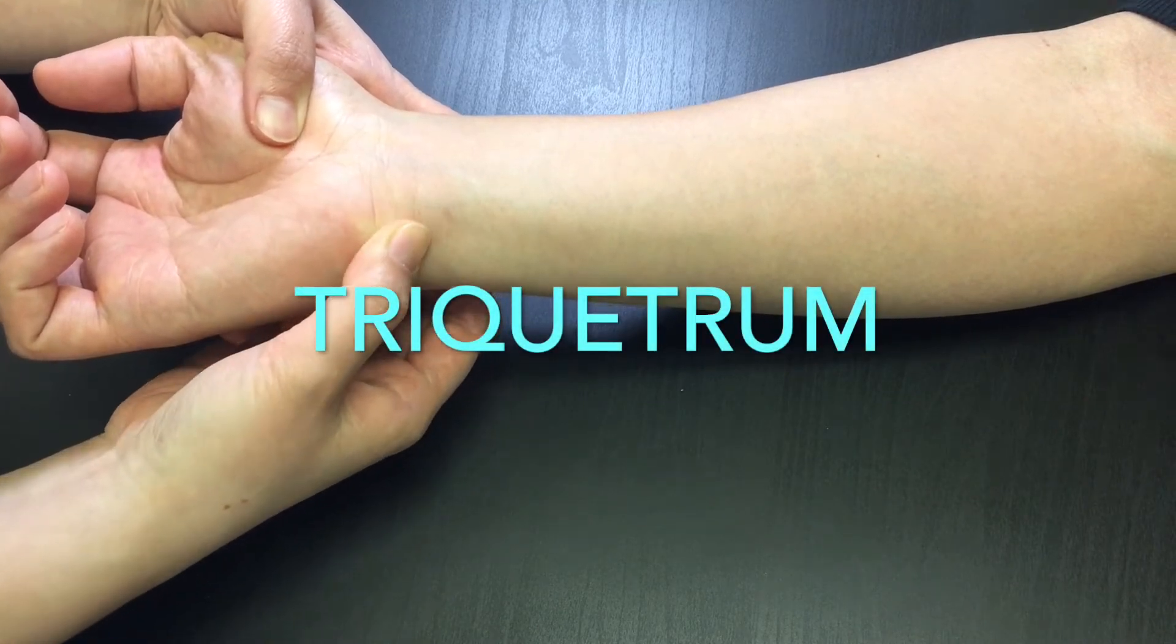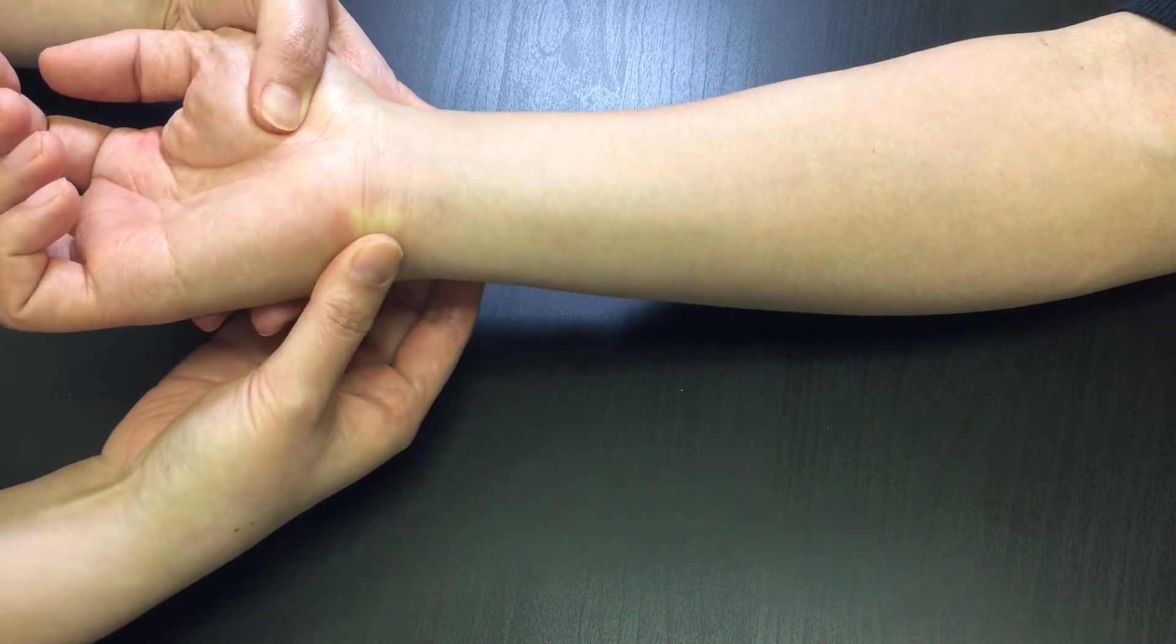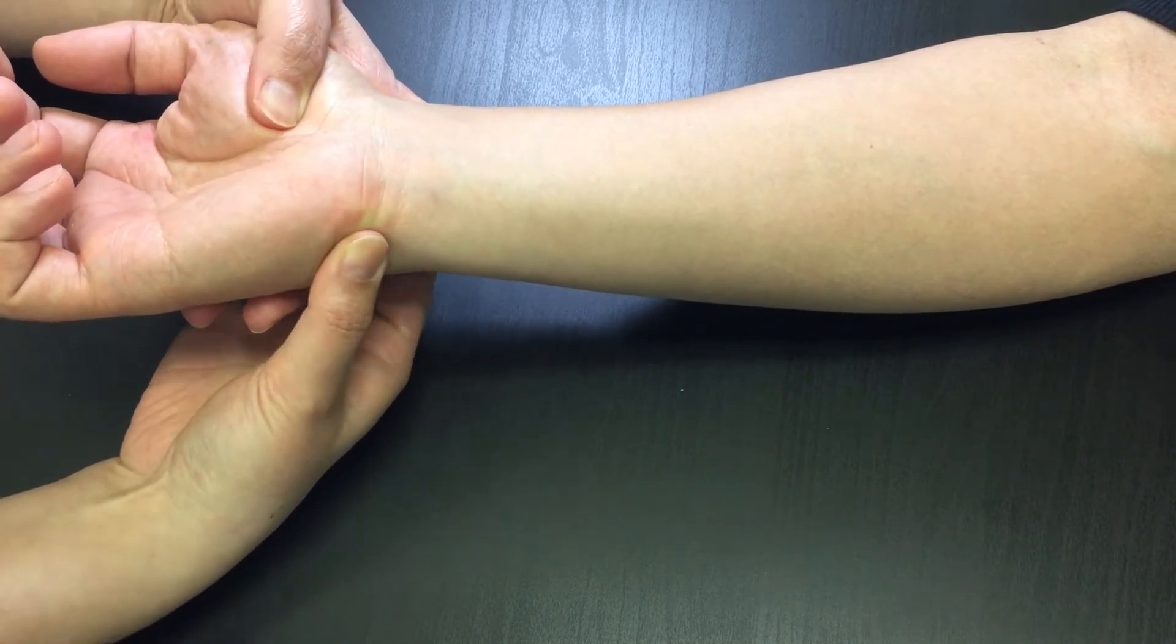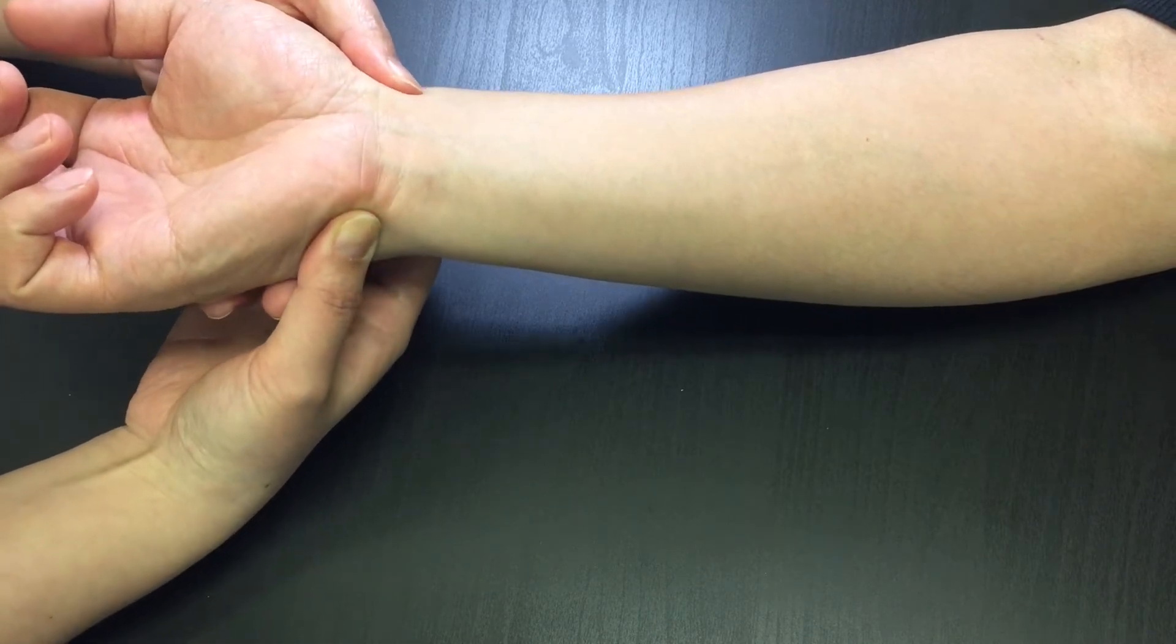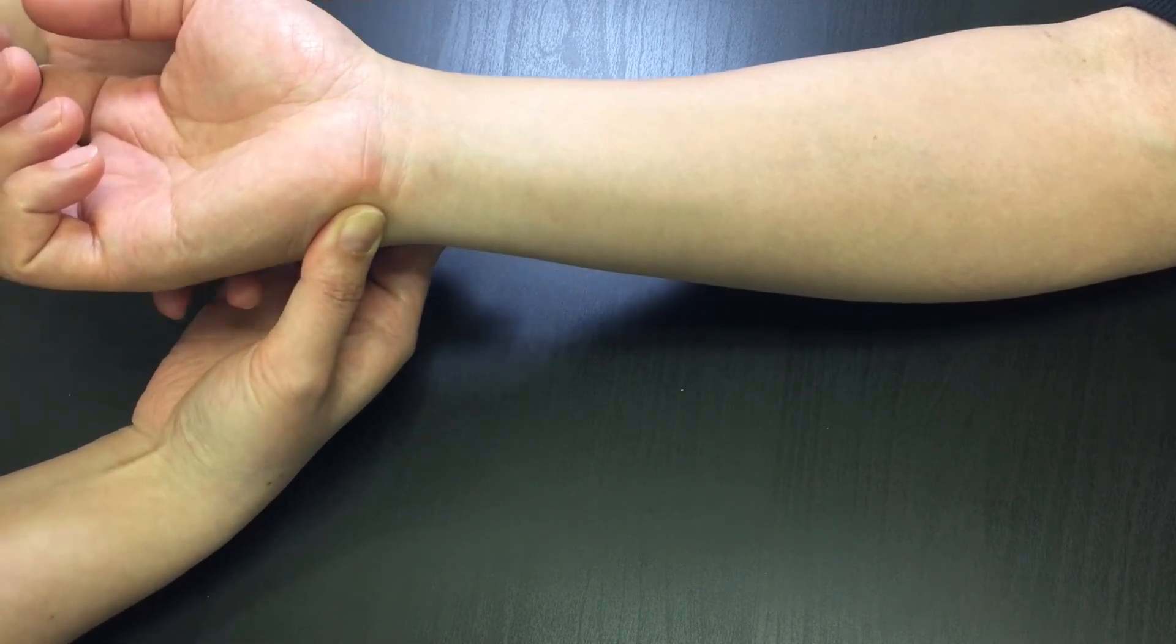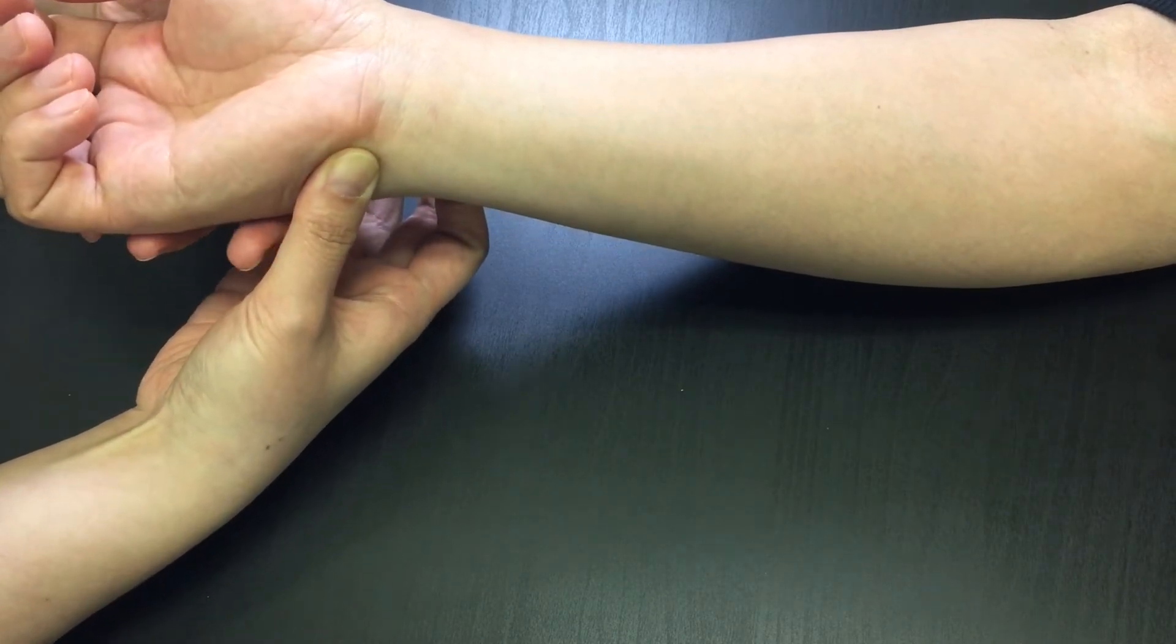Triquetrum is posterior to pisiform and just distal to the ulnar styloid process. After locating the ulnar styloid process, slide distally onto the tissue and stay there. Have your patient's wrist radially deviated. You can feel the triquetrum bulges to the side.